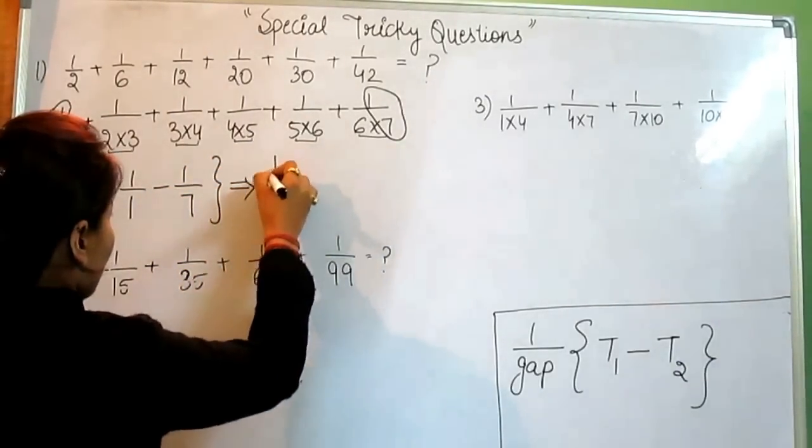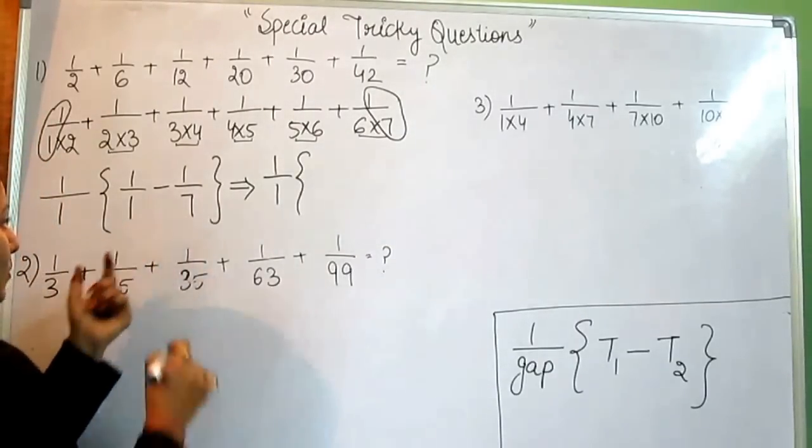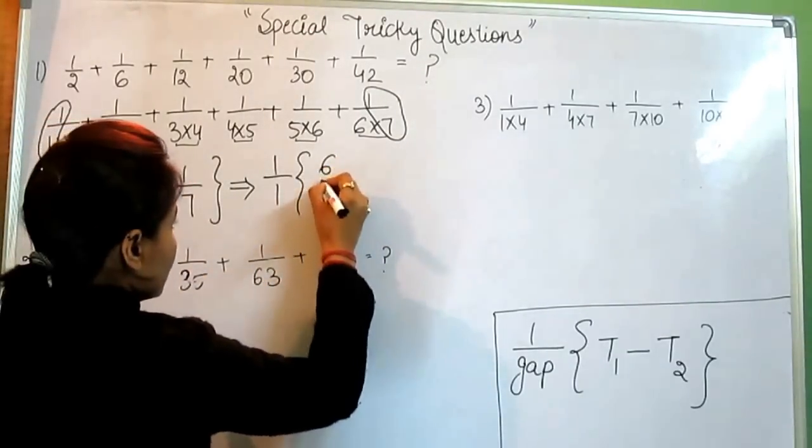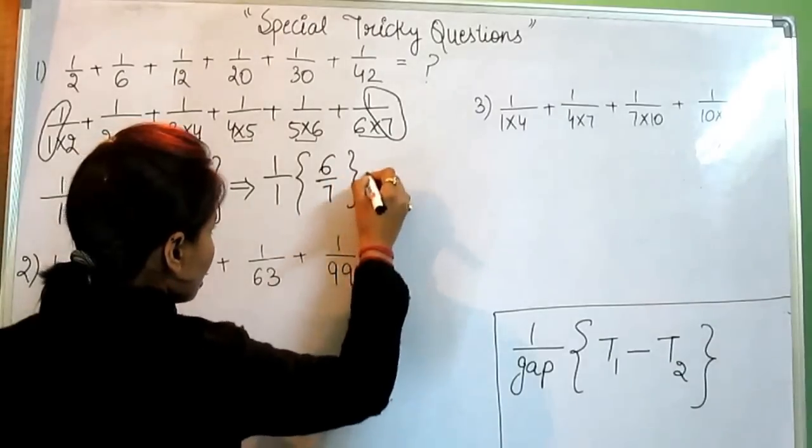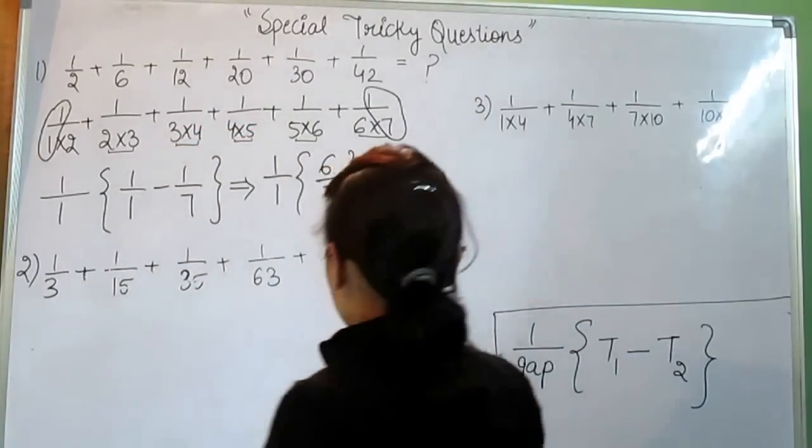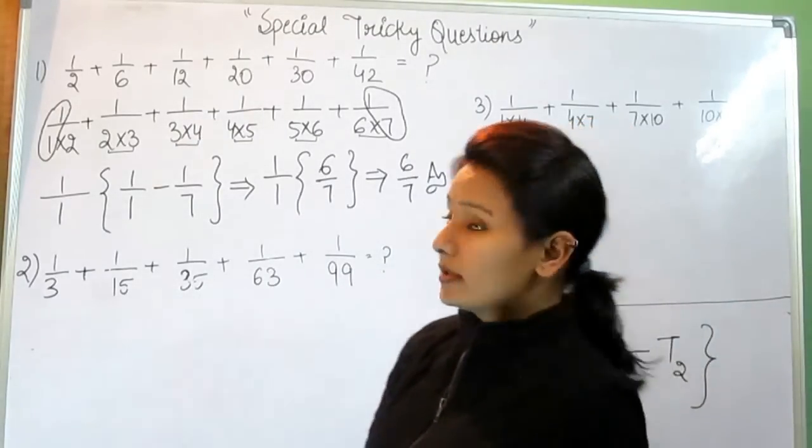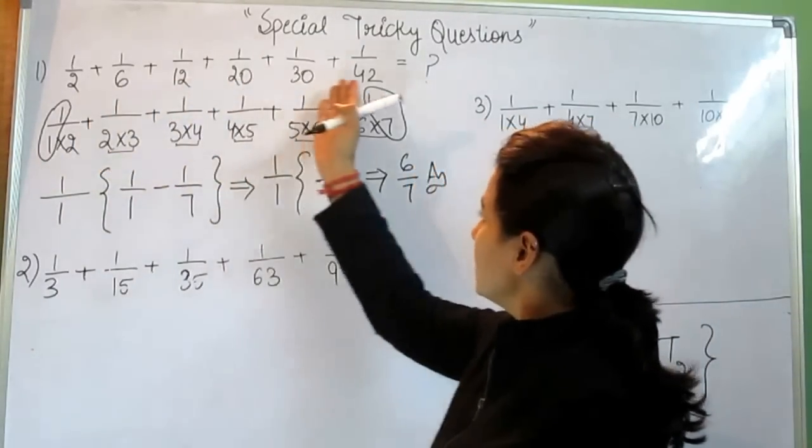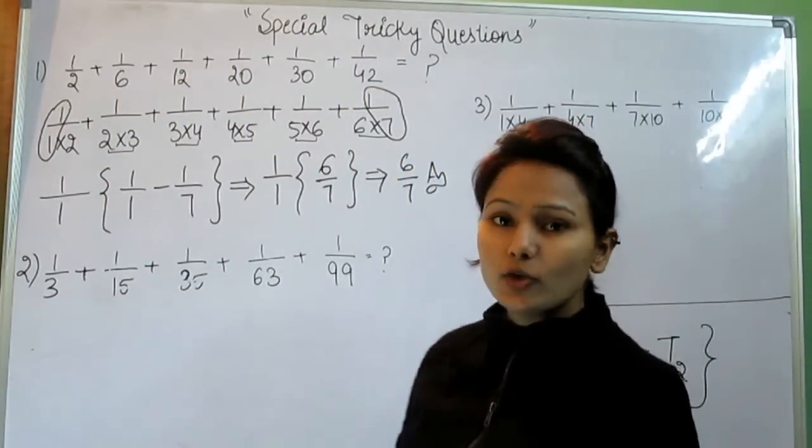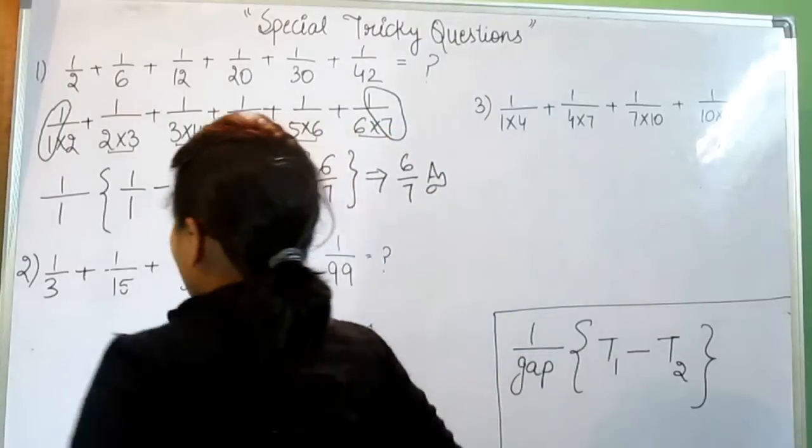First, T1 is 1 by 1 minus last is 1 by 7. Now, solve 1 by 1. And when you take LCM of these numbers, you will get 6 by 7. And finally, your answer would be 6 by 7. You can check it at your home. You can take LCM of these all numbers and finally, you will see your answer would be 6 by 7.